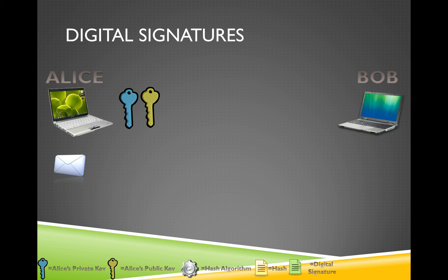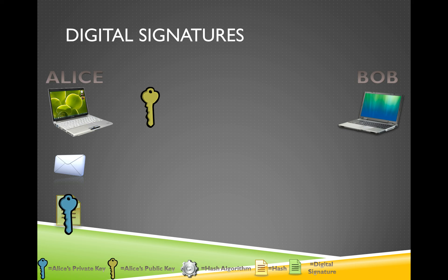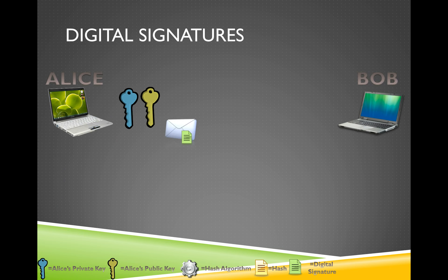Now let's talk about digital signatures and how they work, using the example of someone signing an email. Alice is going to sign an email and send it to Bob. Alice creates the email and runs it through a hashing algorithm to get the hash or message digest, which is a fixed-length output. She then takes that hash and encrypts it with her private key. Since she's using email in this example, she'll attach that signature to the email and send it to Bob.